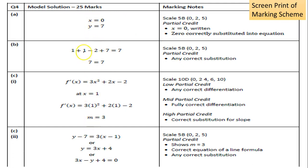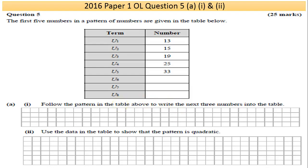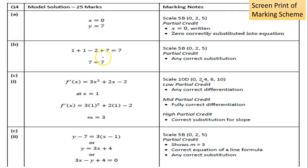Looking at the marking scheme: Part A was a 5B scale (jumps of 0, 2, 5), Part B was also 5B, Part C(i) was 10D — the first time we've seen a D scale, which goes 0, 2, 4, 6, 8, 10 — and Part C(ii) was a 5B scale again, making 25 marks total. Differentiation is a process that will be asked in a variety of questions, so make sure you know it. If you can at least get the first part differentiated, you can achieve some marks.